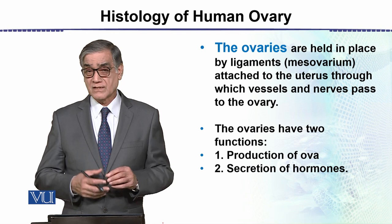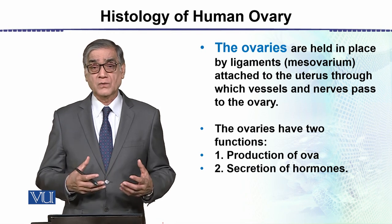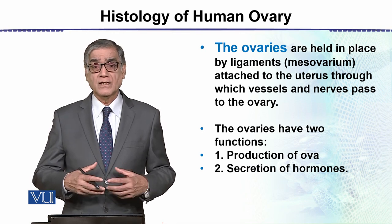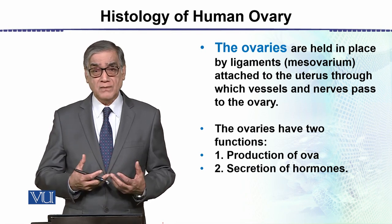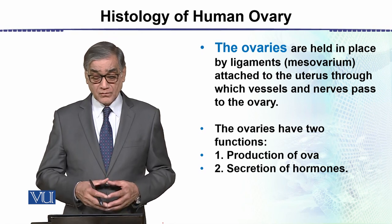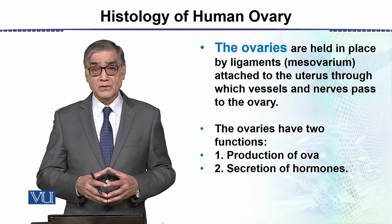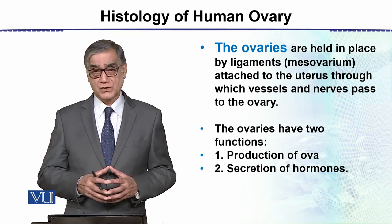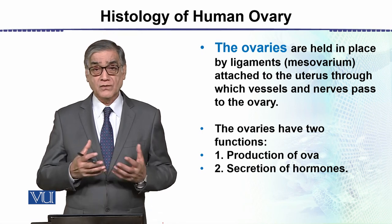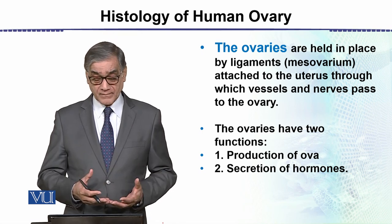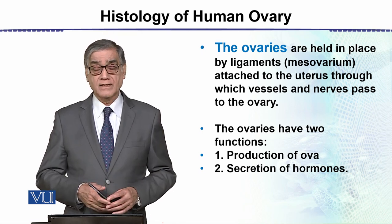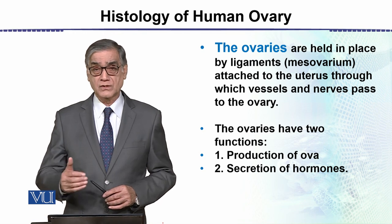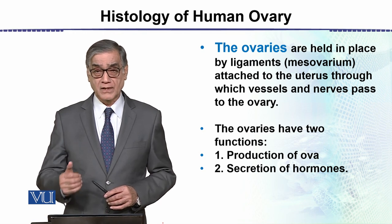Blood supply and nerve supply are both present here, because without these two things there is no life of any organ. The ovaries have two main functions: one is the production of ova, and secondly the secretion of hormones.